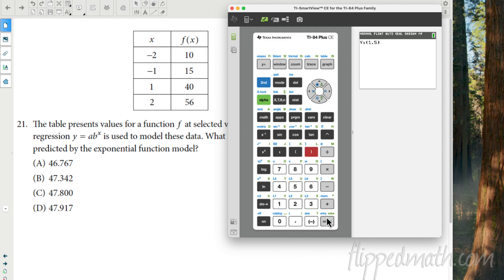And guess what? That should be an answer choice when we're all done. 46.767. They rounded it. Great job, College Board. You rounded it. That's choice A.